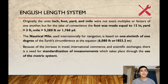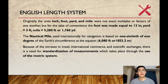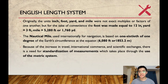Originally, the units of inch, foot, yards, and miles were not exact multiples or factors of one another. But for the sake of convenience, the foot was made equal to 12 inches, yard equals 3 feet, and mile equals 5,280 feet or 1,760 yards. The nautical mile, used internationally for navigation, is based on 1/60th of 1 degree of the Earth's circumference at the equator. Because of an increase in travel, international commerce, and scientific exchanges, there is a need for standardization of measurements through the use of the metric system.